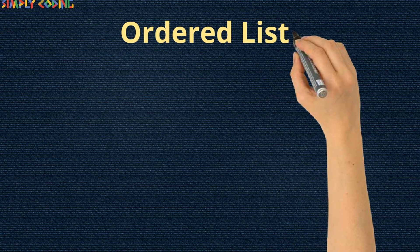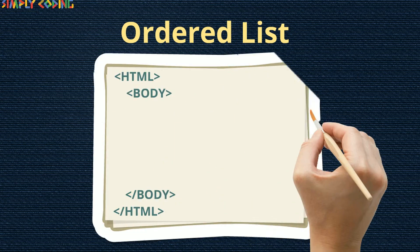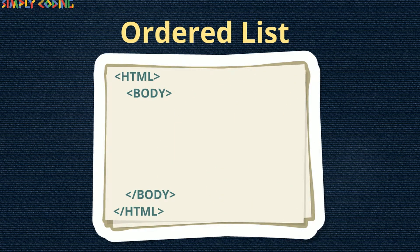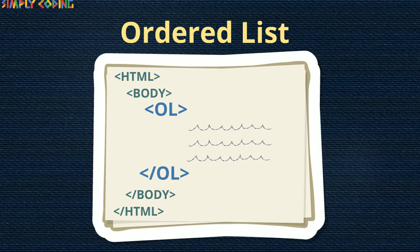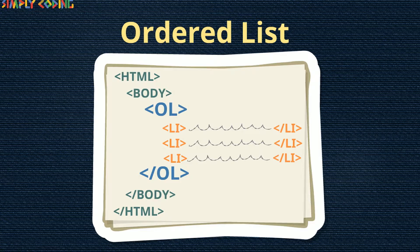Next, we will cover ordered list or numbered list. To create an ordered list, you enclose the content within an ol tag. Each list item within it is marked with a li tag.